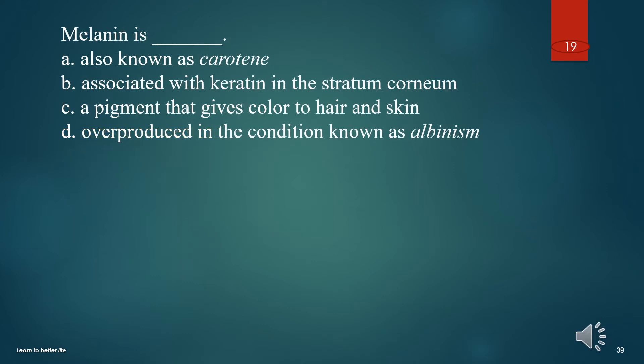Melanin is: A. Also known as carotene. B. Associated with carotene in the stratum corneum. C. A pigment that gives color to hair and skin. D. Overproduced in the condition known as albinism. The answer is C. A pigment that gives color to hair and skin.